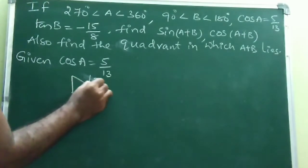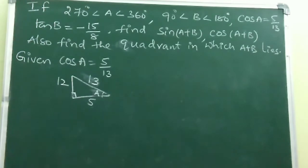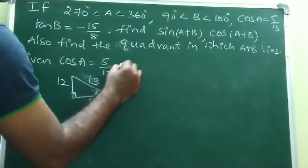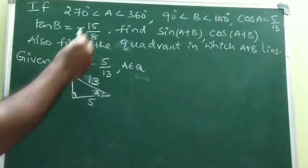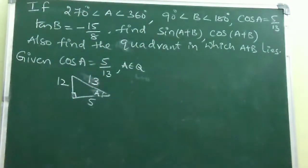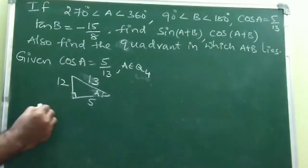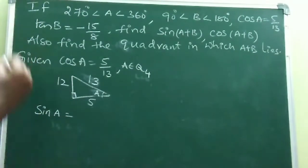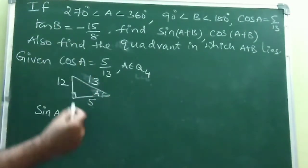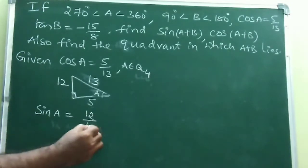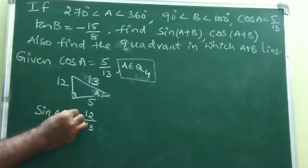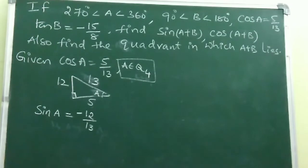Also, tan B = -15/8 is given, and B lies between 90° and 180°, so B belongs to Q2. In Q2, tan is negative, which is consistent. Using a right-angle triangle with tan B: opposite = 15, adjacent = 8. By Pythagoras, 15² + 8² = 225 + 64 = 289, so hypotenuse = 17.